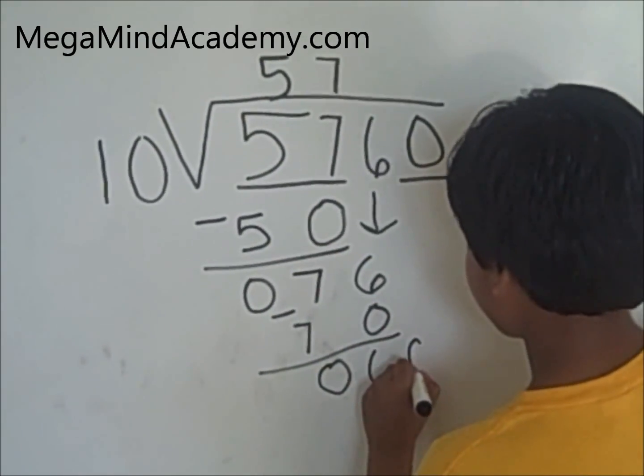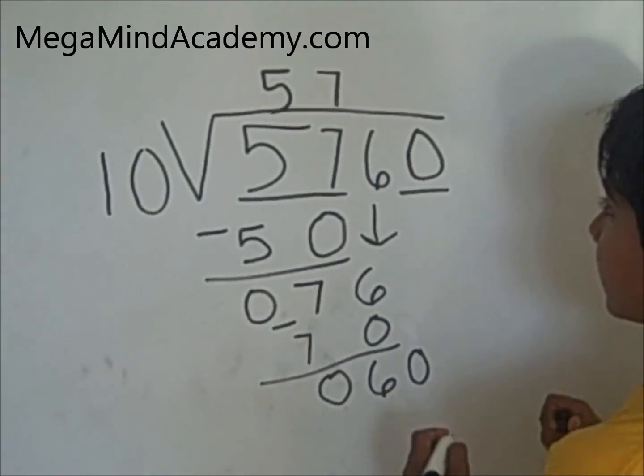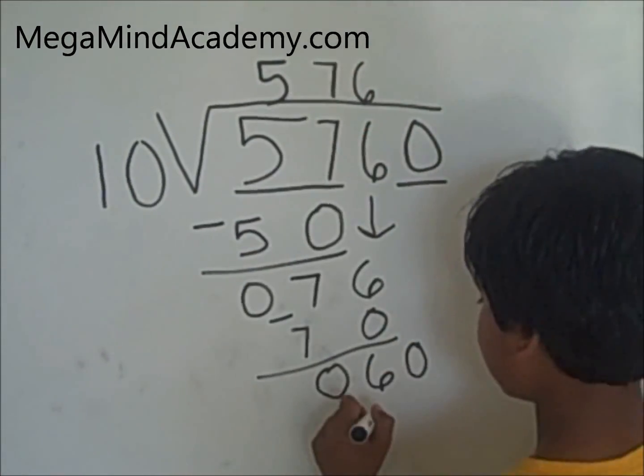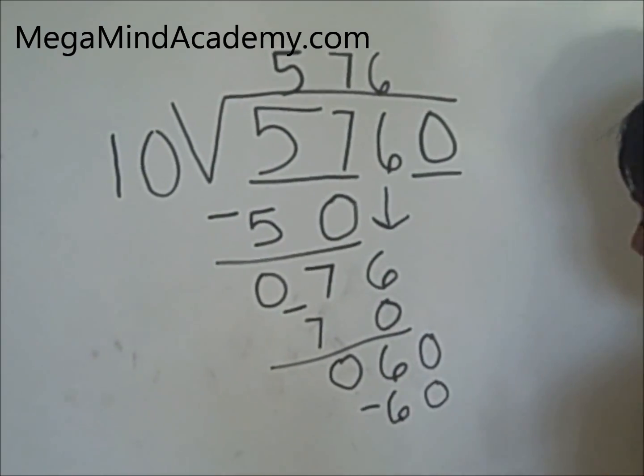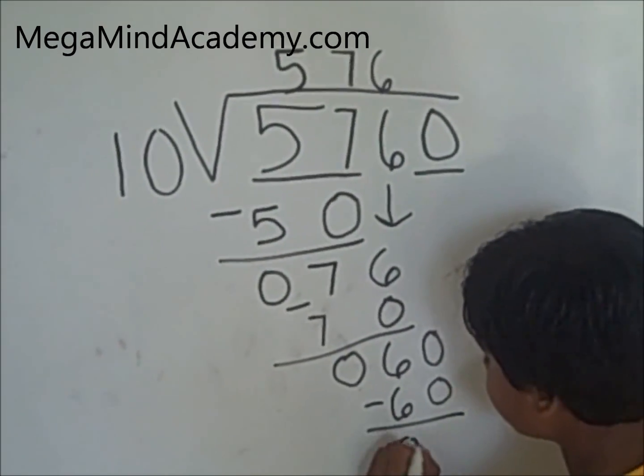Now we put 0 down here. Now it's 60. 10, 6 is a 60. Now you minus 60 from 60. That equals 0.